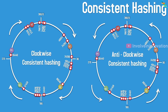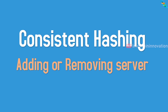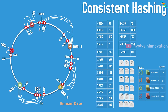The real benefit of consistent hashing is when adding or removing servers — you don't need to remap data in other servers. For example, if we remove server 4, only the data mapped to server 4 (like 65440) needs to be remapped to the next nearest server, S3. All other data remains completely untouched. The change is very minimal whenever we add or remove a server.